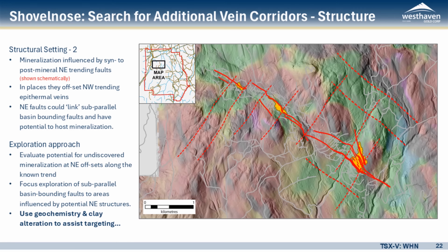So we want to look along the main Shovelnose trend and look for additional areas that have been impacted by these northeast structures, but also look at the additional sub-parallel northwest trending basin-bounding faults and where they would potentially be impacted by and influenced by these northeast structures as well — and those become immediate target areas for us to focus our work.